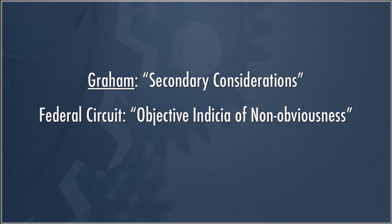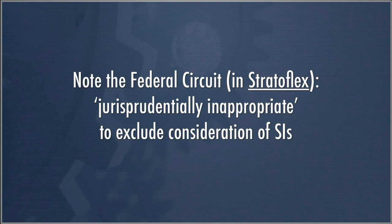What secondary considerations are is sort of an add-on — an additional analysis that can be done to get at the question of whether a particular invention is good under Section 103 or not. In fact, the Federal Circuit has upgraded this so much that it said in the Stratoflex case that it would be jurisprudentially inappropriate to exclude considerations of secondary indicia. So district courts are on notice from the Federal Circuit that they need to consider these secondary considerations. They aren't necessarily dispositive — and indeed, as we'll see in a moment, they're almost never actually dispositive — but they do have an important role to play.